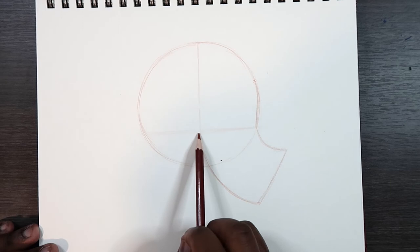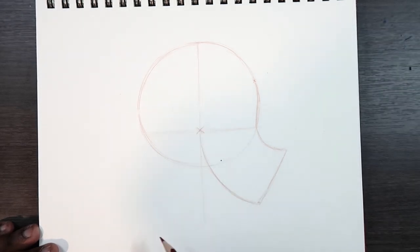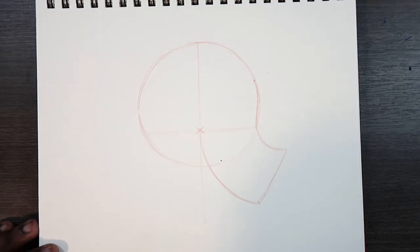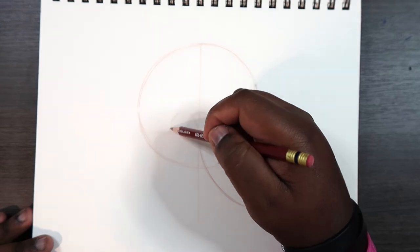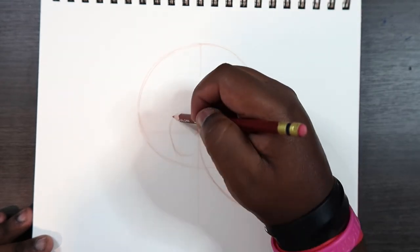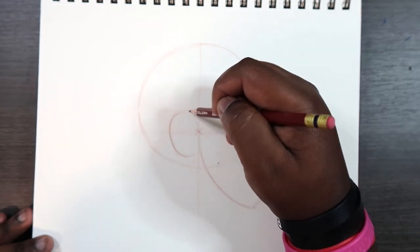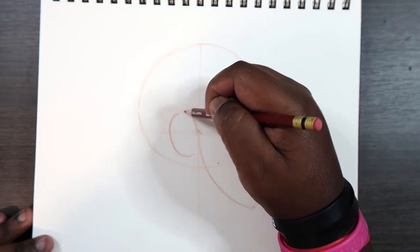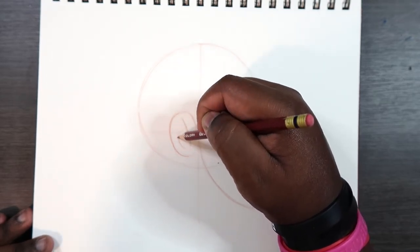And then right back up here where these two lines intersect, this big X here, that's where the ear is going to start. So I'm going to start to draw an ear. And that's just my style of ears.